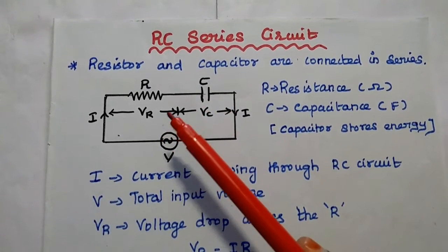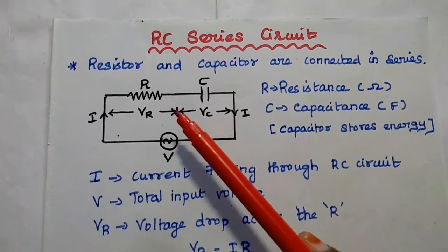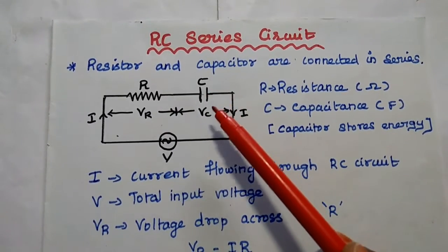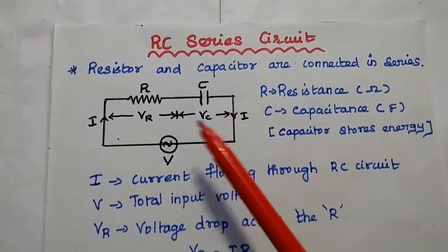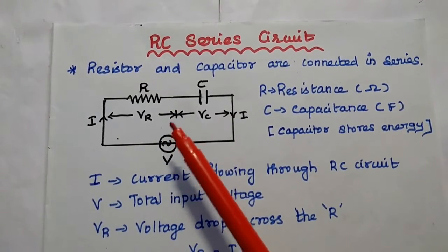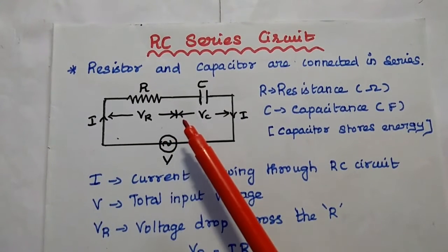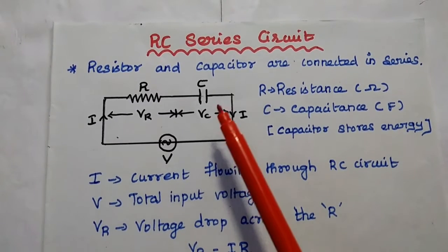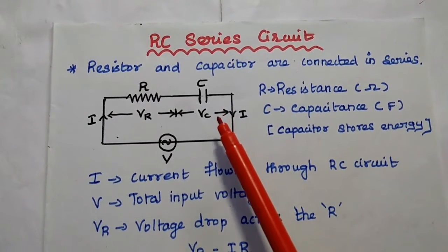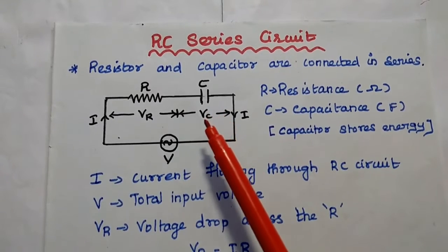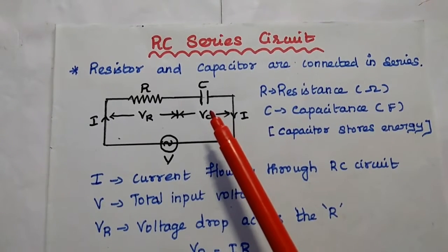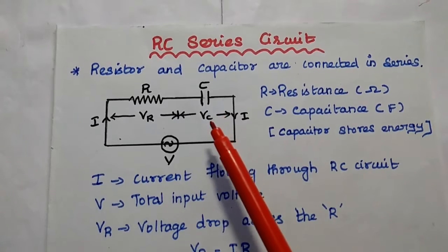The voltage drop across the resistance is Vr, and the voltage drop across the capacitance is Vc. The resistor is mainly used to oppose the flow of current through it. The capacitor is mainly used to store electric energy in the form of charge — charging and discharging is the characteristic of the capacitor.